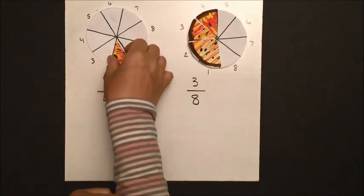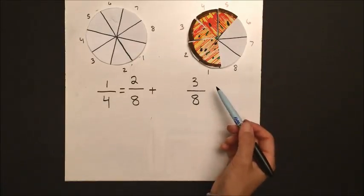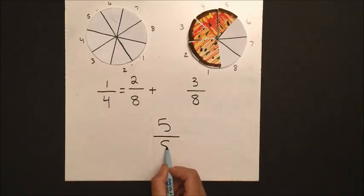If we take those two pieces and add them to our second pizza, we then have five out of the eight possible slices. So we have five eighths of a pizza.